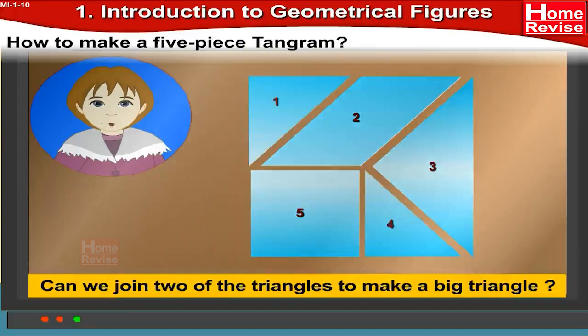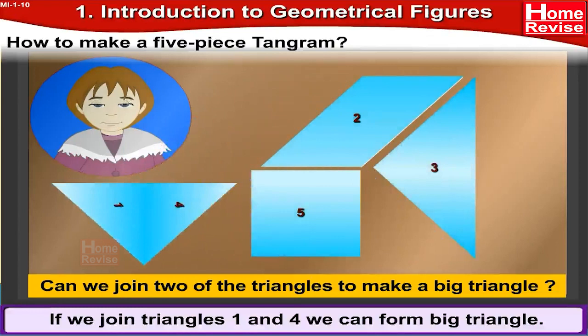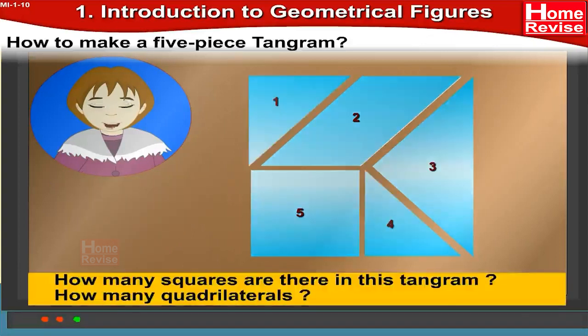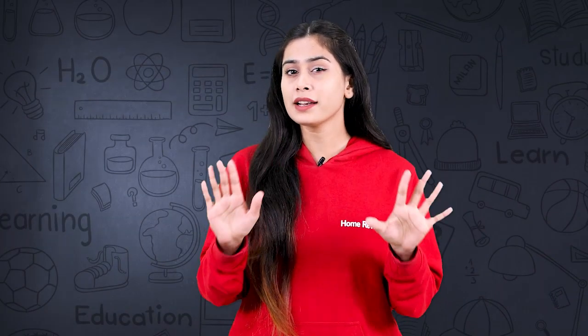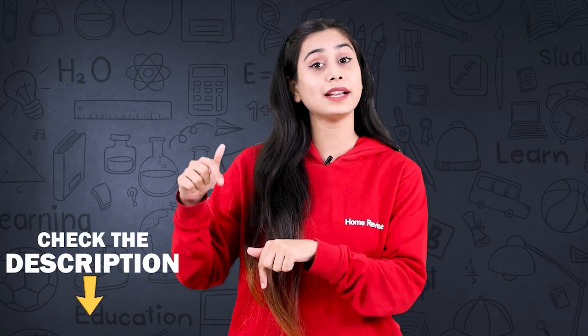Can we join two of the triangles to make a big triangle? Yes — if we join triangle one and triangle number four, we can form a big triangle. How many squares and how many quadrilaterals are there in this tangram? There is only one square, piece number five, and one quadrilateral, piece number two. If you want to see all the chapters in this format, check the description for more educational videos and subscribe to our channel.